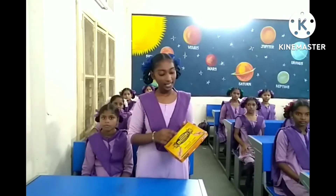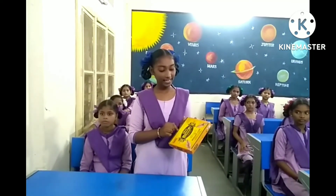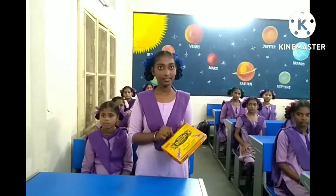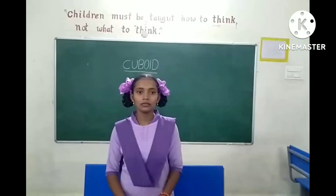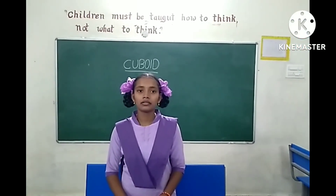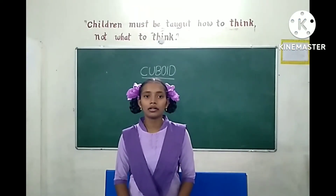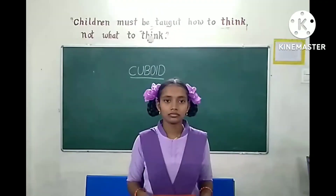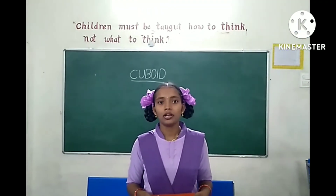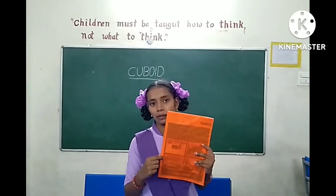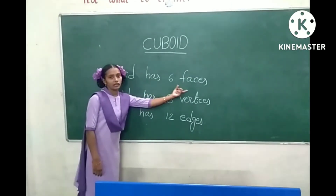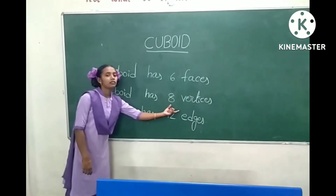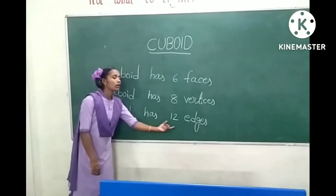Let us recall today's topic. What is a cuboid? A cuboid is actually a rectangle with some thickness or height. How many faces does a cuboid have? Cuboid has six faces. How many vertices does a cuboid have? Cuboid has eight vertices. How many edges does a cuboid have? Cuboid has 12 edges.